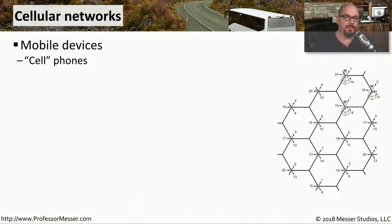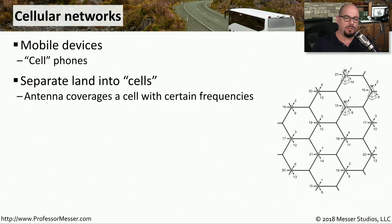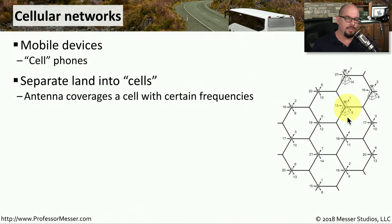You often hear our mobile devices described as cell phones. That's because we broke up the geography into these separate cells of communication and we placed antennas at the corners of these cells so that we could communicate using these mobile devices.